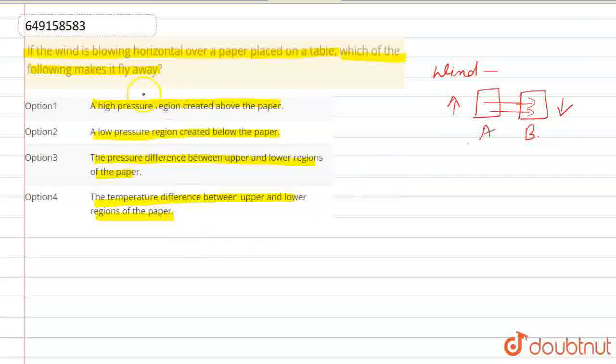So if we have a paper and wind is blowing over it, what is happening? On the top of the paper, low pressure is created.